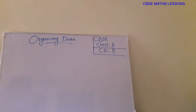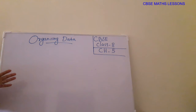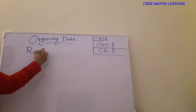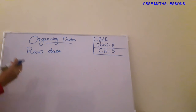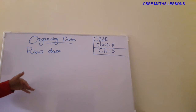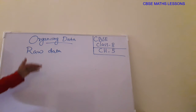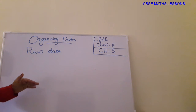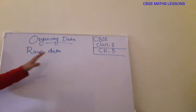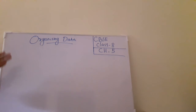Our next topic in chapter five, Data Handling, is organizing data. Most of the time we get data in an unorganized way — that data is called raw data. Some information is there, but it is not organized in a systematic way. We need to organize or arrange it in a systematic way, which is called organizing data. The unorganized data is called raw data.